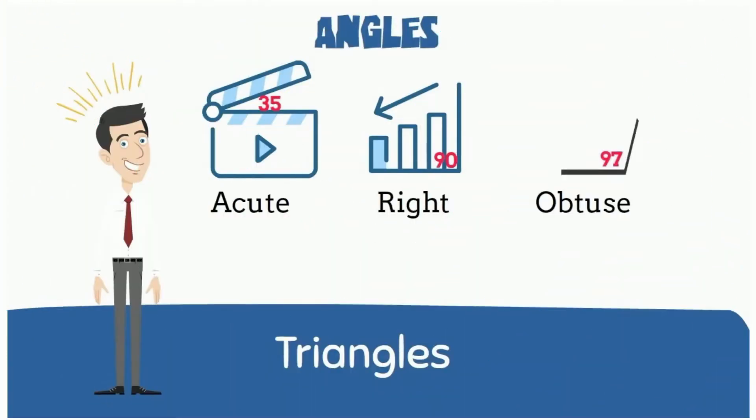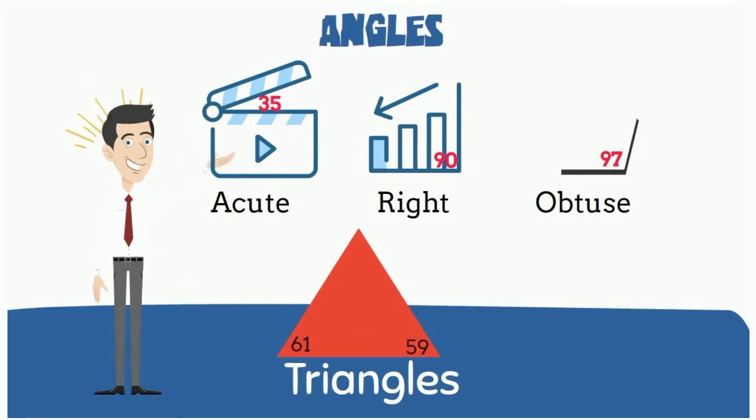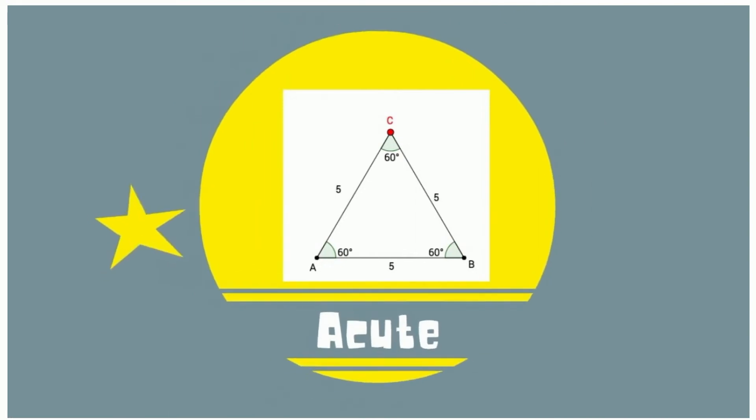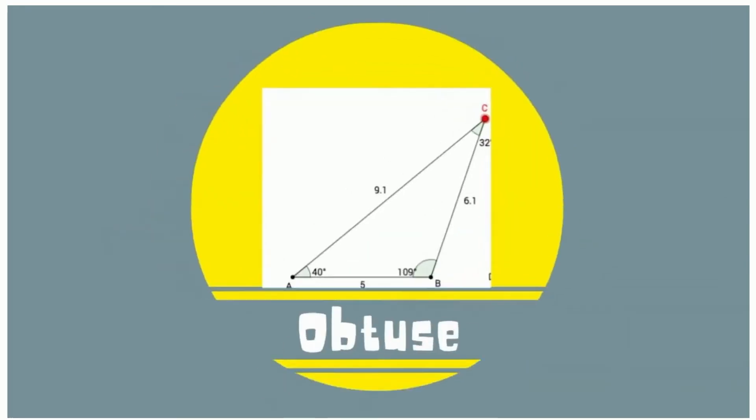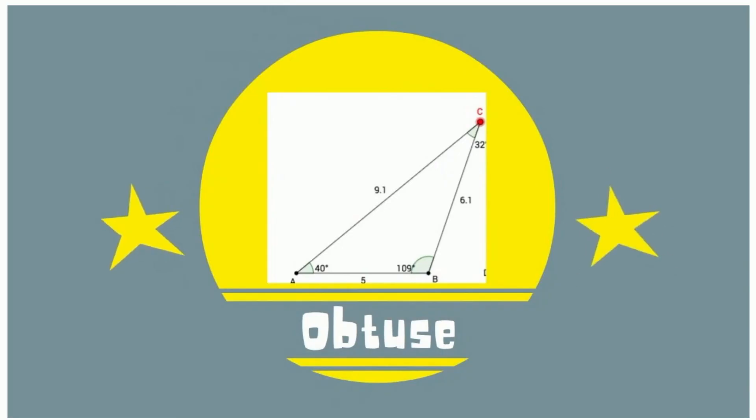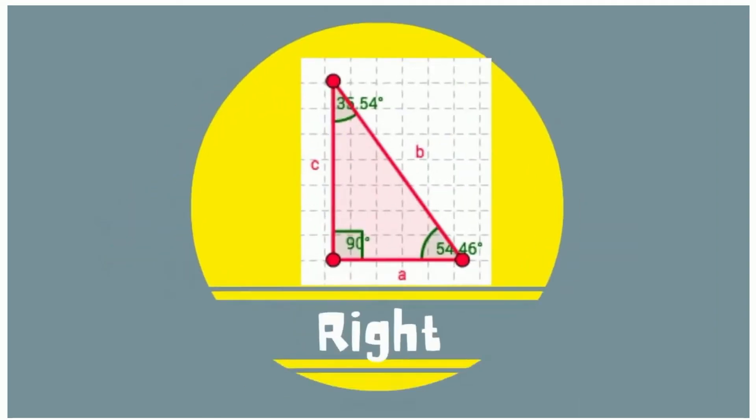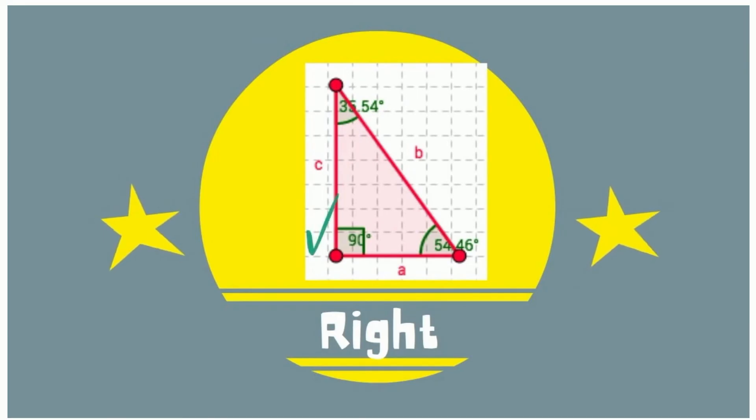All triangles have at least two acute angles, so the third angle determines the type of triangle that you have. An acute triangle is a triangle with three angles that measure less than 90 degrees. An obtuse triangle is a triangle with one angle greater than 90 degrees. And a right triangle is a triangle with one right angle, or an angle that measures 90 degrees.